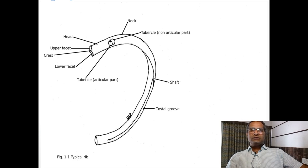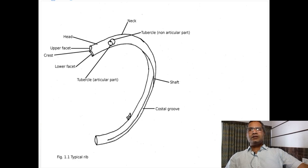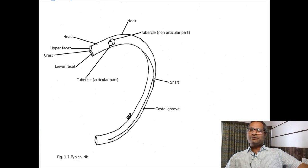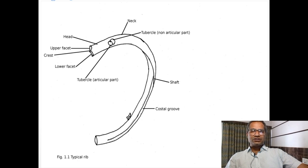From the head, the neck starts and goes posteriorly, backward and laterally, up to the tubercles of the rib. The neck shows an anterior surface, posterior surface, upper margin, and lower margin. Just lateral to the neck is the tubercle, which is divided into articular and non-articular parts. The articular part of the tubercle articulates with the facet on the transverse process of the same vertebra, while the non-articular part has no articulation with the transverse process.